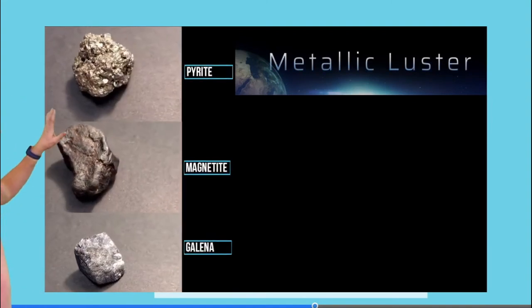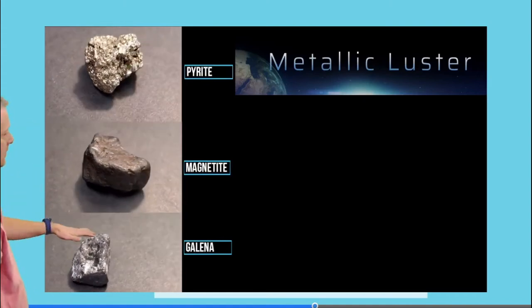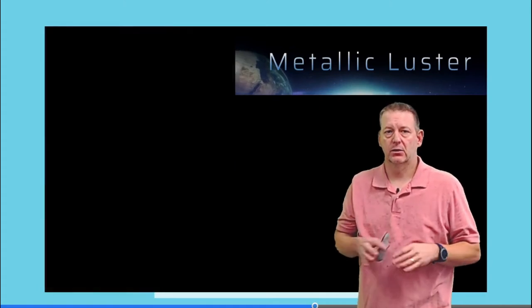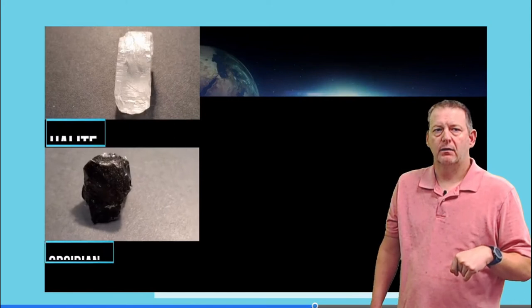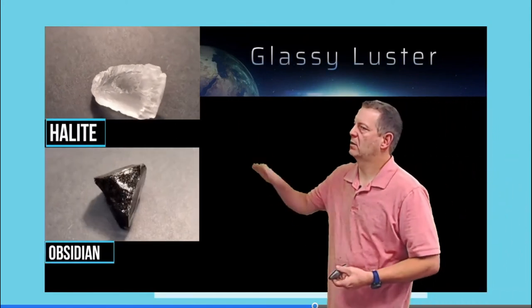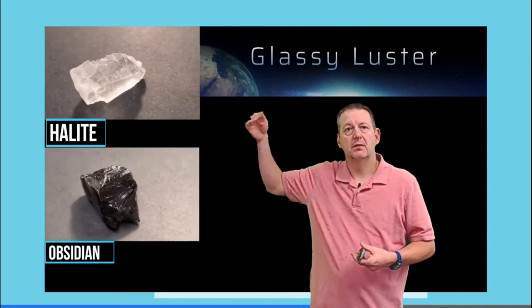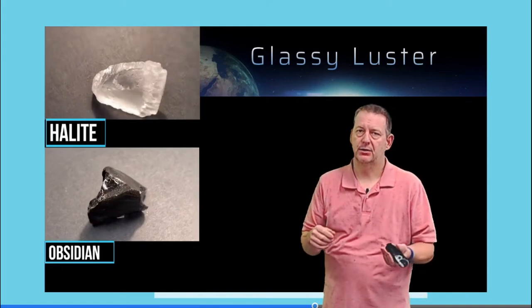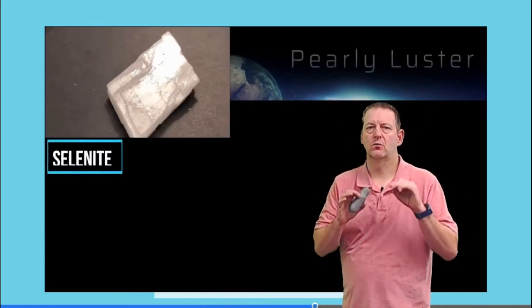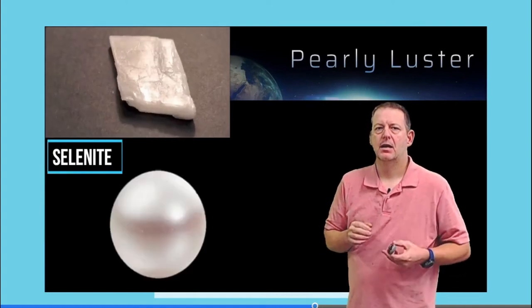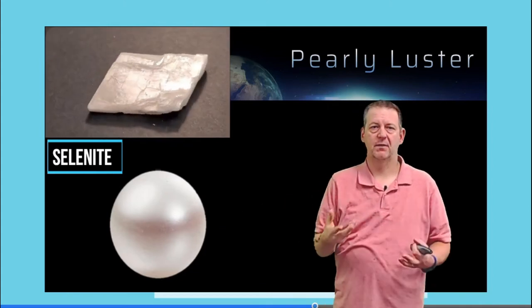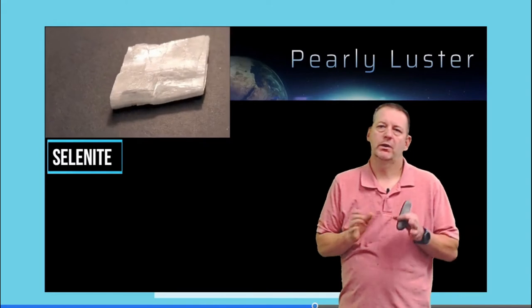Metallic luster minerals — like pyrite, magnetite, and galena — have a real metallic look as you spin them around. Glassy luster minerals, like halite and obsidian, have a shiny glass-like appearance when light bounces off them. Pearly luster, seen in selenite, looks very similar to an actual pearl in the way it reflects light.